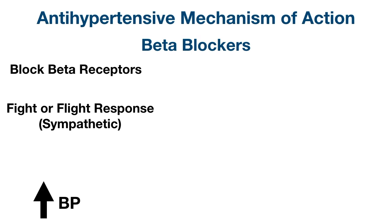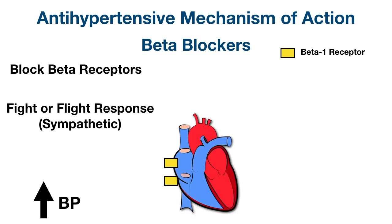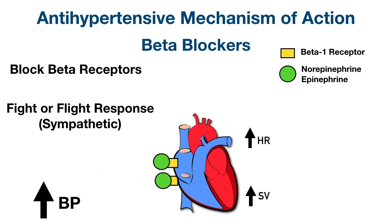We already learned how alpha-1 receptors on blood vessels increase blood pressure through vasoconstriction, but there are also beta receptors in the heart that increase blood pressure when activated. When sympathetic catecholamines such as norepinephrine and epinephrine bind to beta-1 receptors in the heart, heart rate increases as well as stroke volume from increased cardiac contraction, causing increased cardiac output and increased blood pressure.